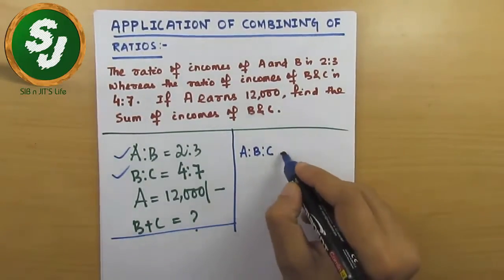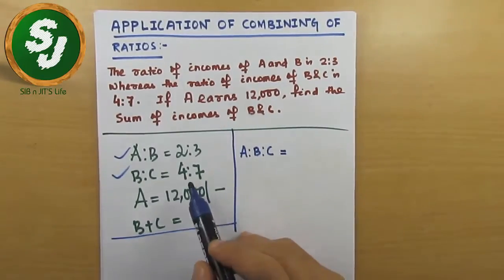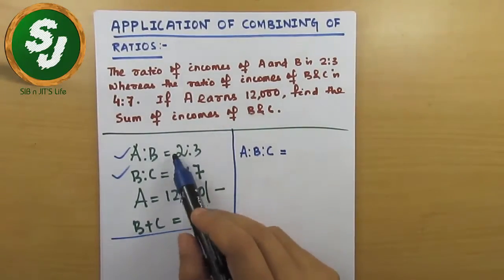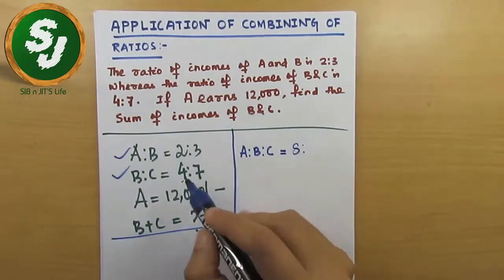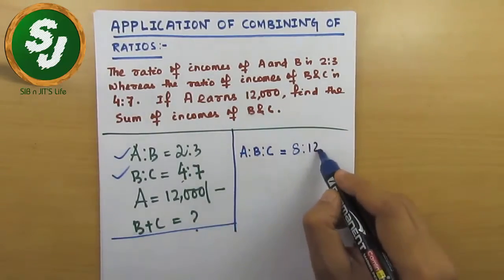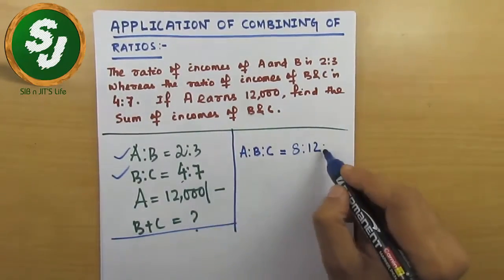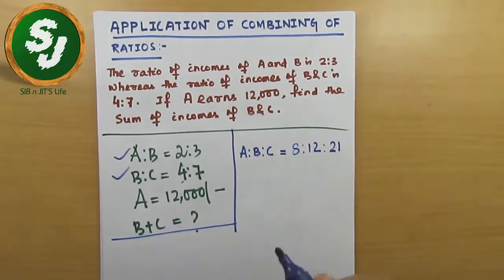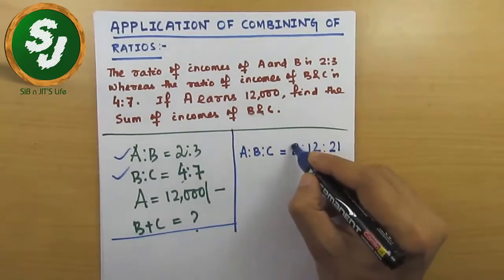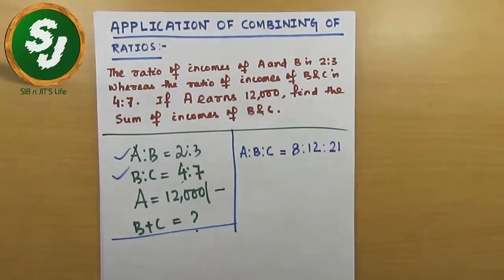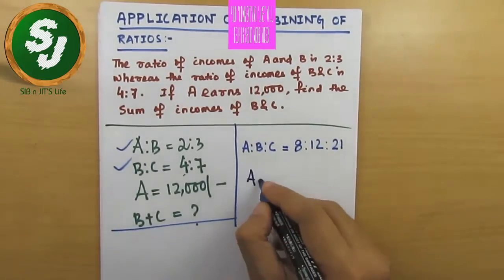This you can find in a fraction of seconds. We've learned this technique. Pick 4, multiply with 2, it becomes 8, then 4 into 3 becomes 12, then 7 into 3 becomes 21. So A is to B is to C becomes 8 is to 12 is to 21.